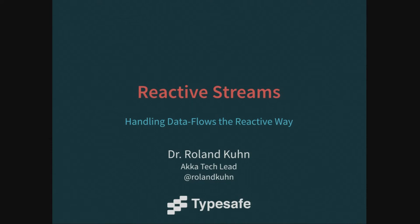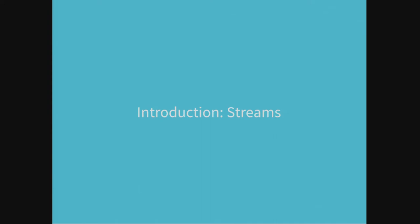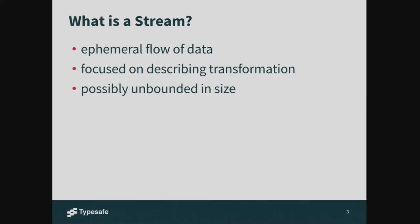First of all, we need to look at what is a stream. A stream is an ephemeral flow of data elements — data items which you process, focusing on the transformation of these items. A stream is something which flows; water which has flown down the stream is gone. A stream can be unbounded in size — not like a list of five elements. It could be a ticker from a stock exchange, and elements can be computed or become known at later points in time.